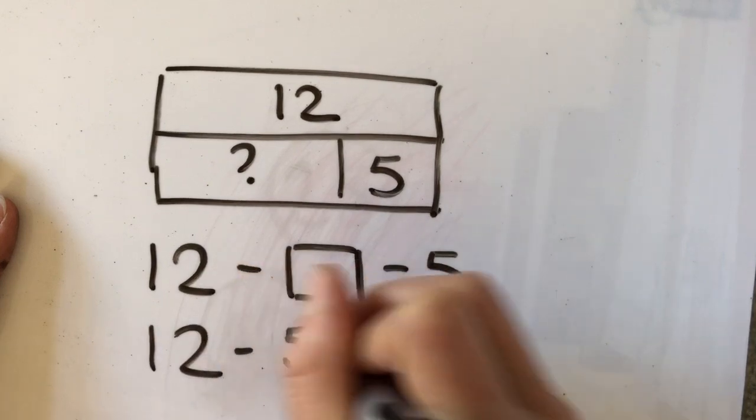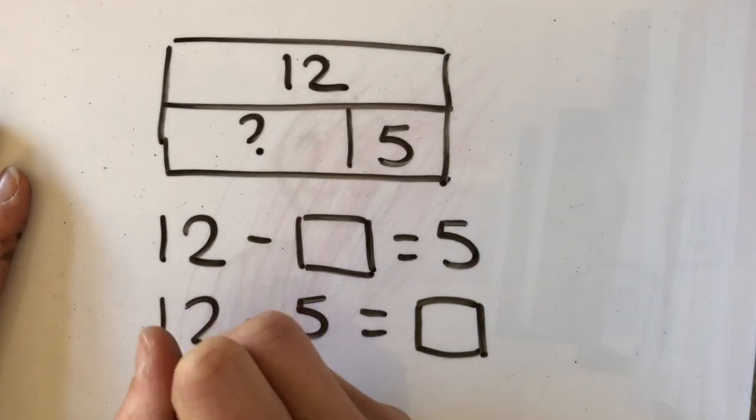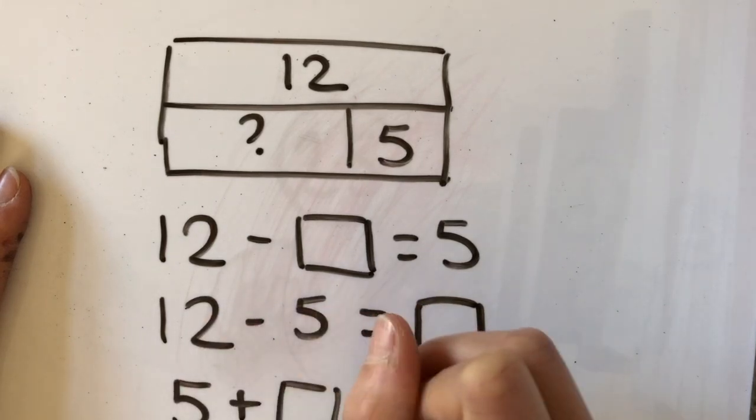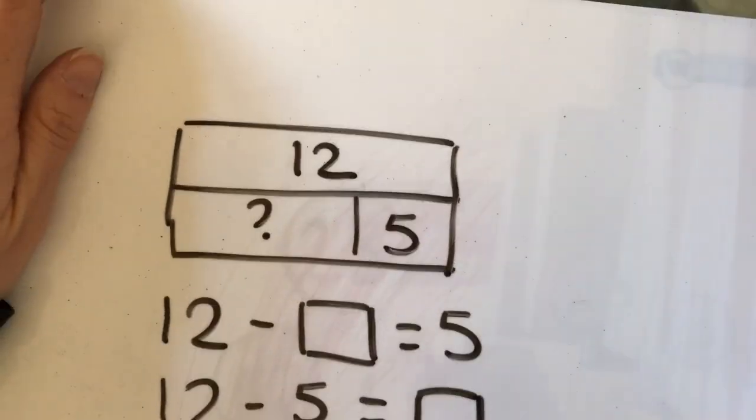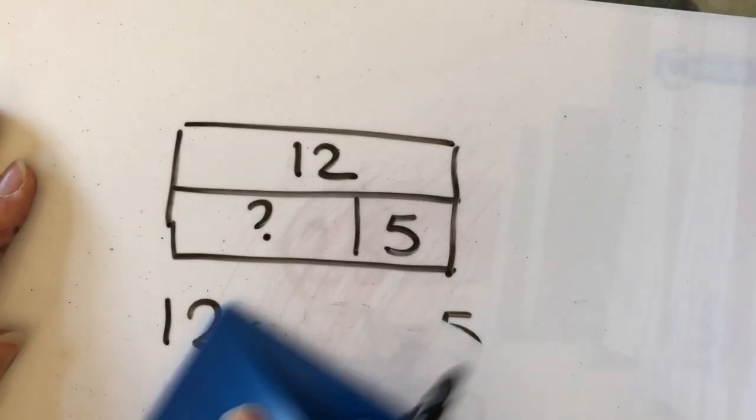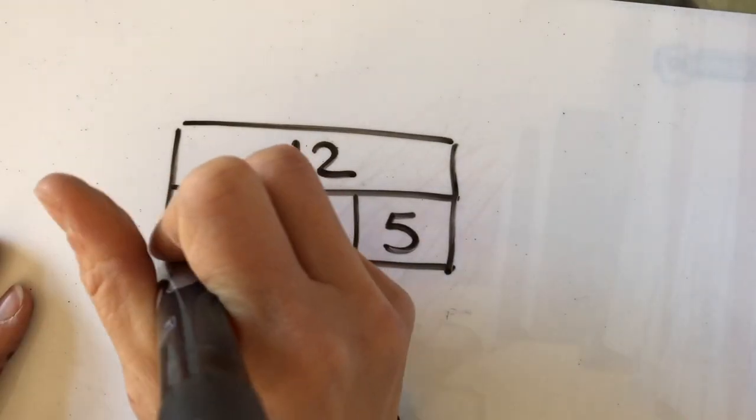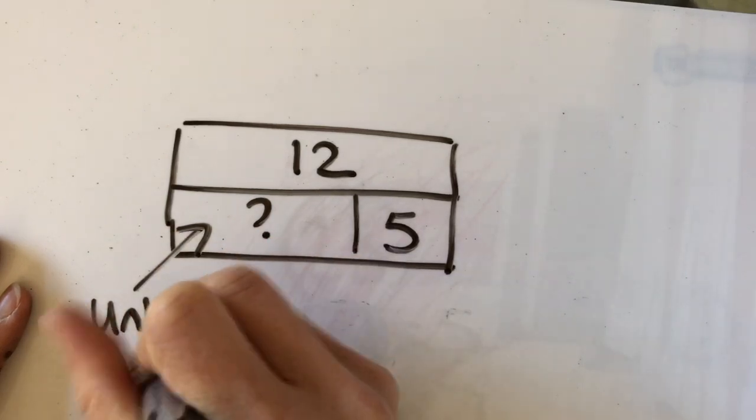Or 12 take away 5 gives me something. Or even 5 add something gives me 12. All of them work with that calculation. But what I'm looking at here is that this is my starting number, so it's an unknown start.